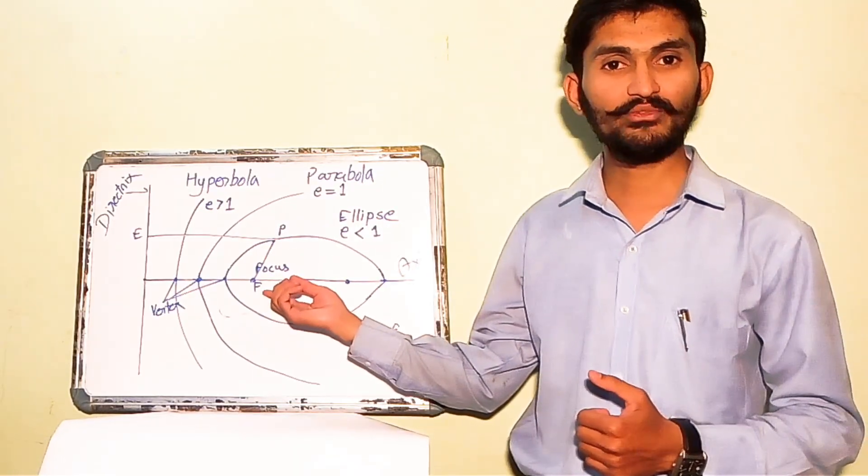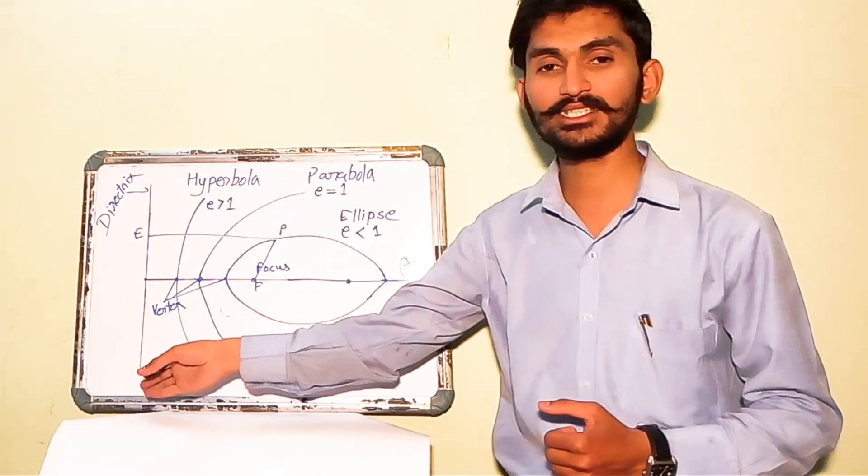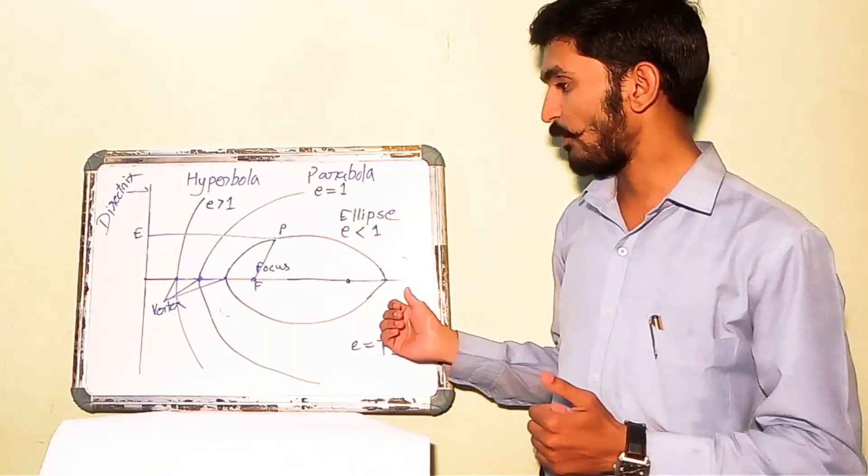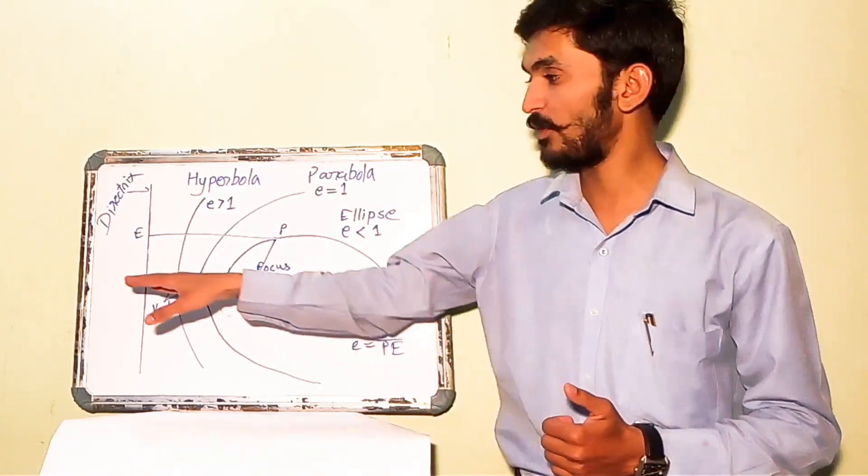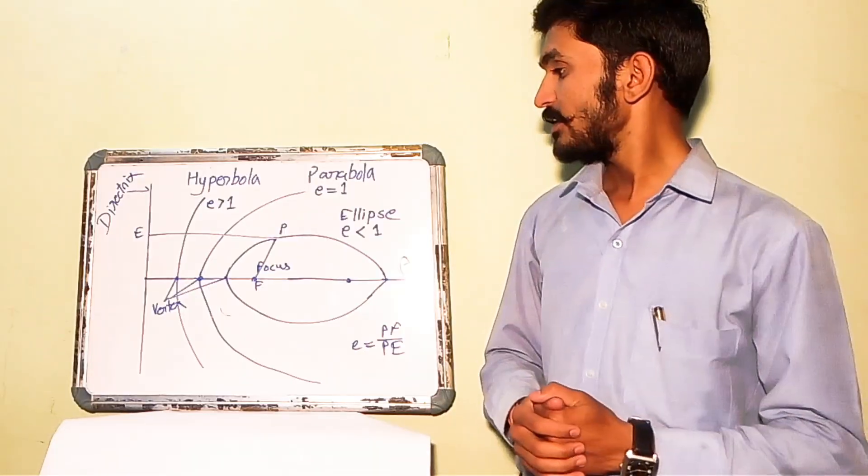A fixed point is called a focus. And a fixed straight line is called directrix. And a line passing through the focus and perpendicular to the directrix is called axis.